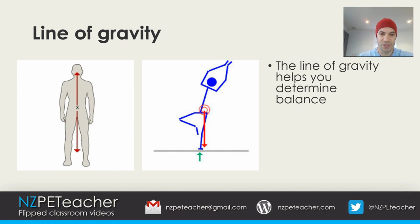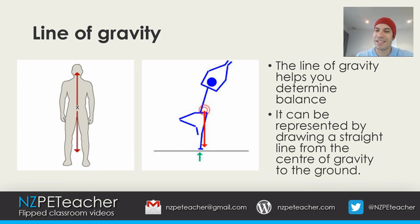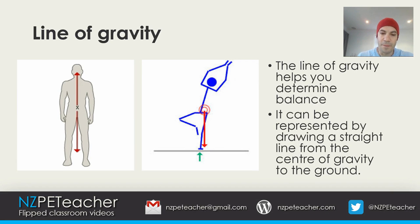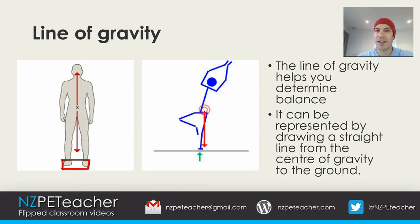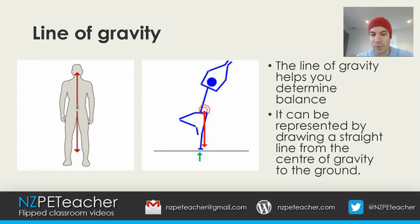Line of gravity helps you determine balance. It can be represented by drawing a straight line from the centre of gravity directly to the ground. If the line of gravity passes through the base of support, then the object is in balance. The base of support on the left is as wide as the person's two feet, so the line of gravity clearly passes through the base of support. If the line of gravity touches the ground at a point outside of the base of support, then the object will tip over.